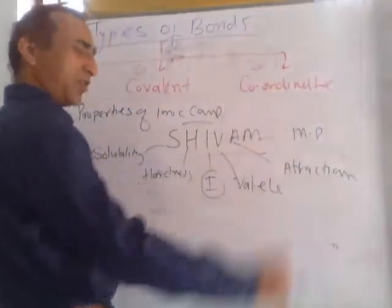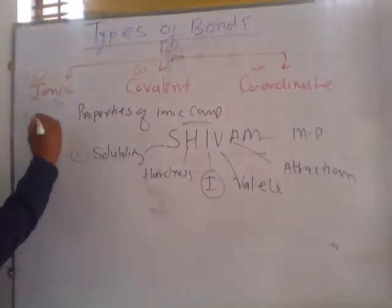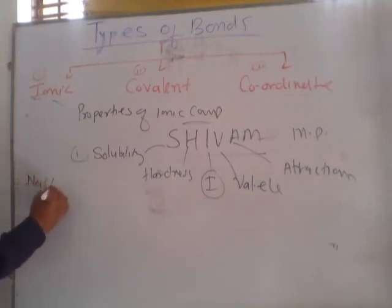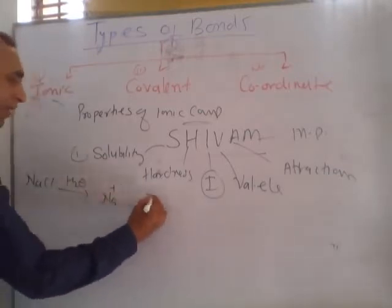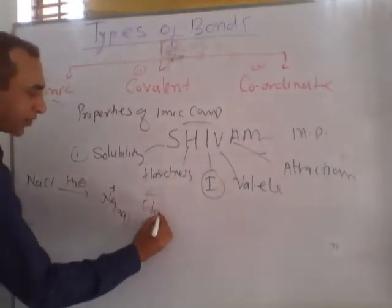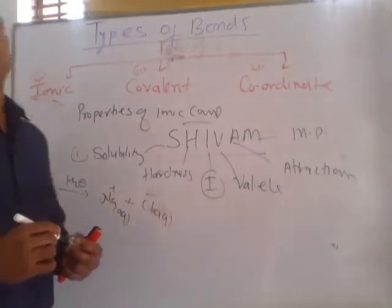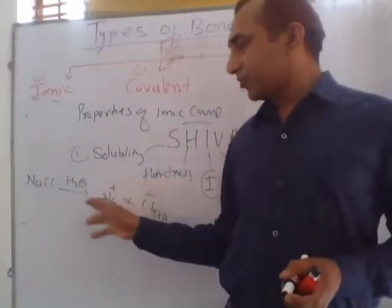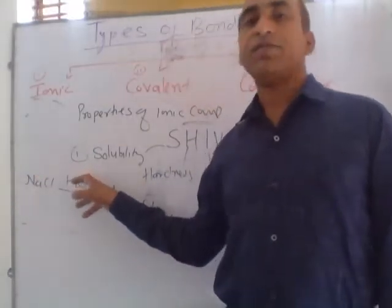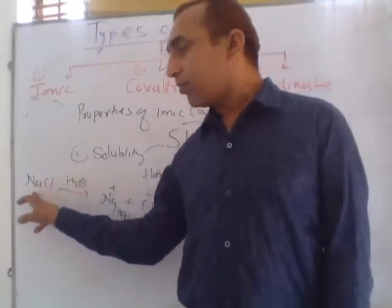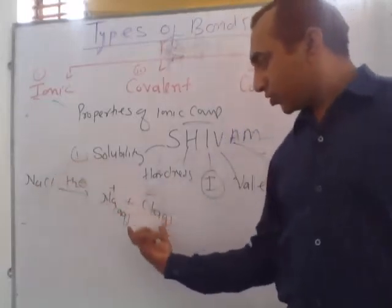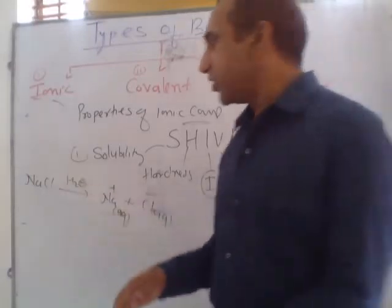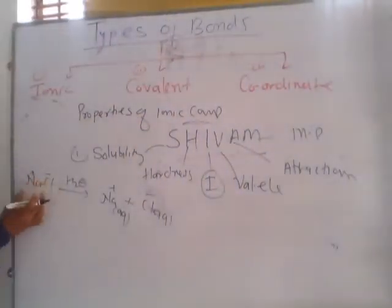First is solubility. If we dissolve an ionic compound in water, it provides ions — positive and negative — written as AQ (aqueous). Cations and anions are dissolved in water and form their aqueous solution. Remember, ionic compounds are soluble in water, and ionic compounds are insoluble in organic or non-polar liquids. This solution provides ions.